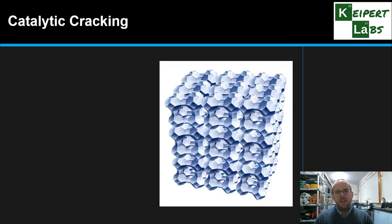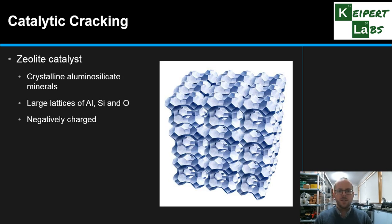And then we get to catalytic cracking, the alternative process. Because the problem is that high temperatures are expensive for us to maintain. So if we can find a better path, or a different path, then that can be really advantageous. So if we can use a catalyst like this one here, zeolite, which is a crystalline aluminosilicate mineral. So it's got aluminum, silicon, and oxygen. And it has a negative charge.